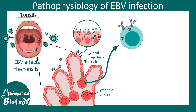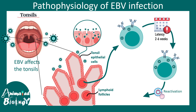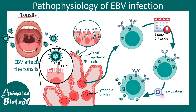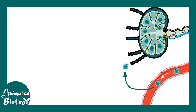The virus has an infection phase, followed by a latency phase where the virus is dormant — lasting two to six weeks or even years. Then there is a reactivation phase where the virus escapes the B cell and infects more cells in the body. Entry into these cell types happens via a receptor known as CD21.